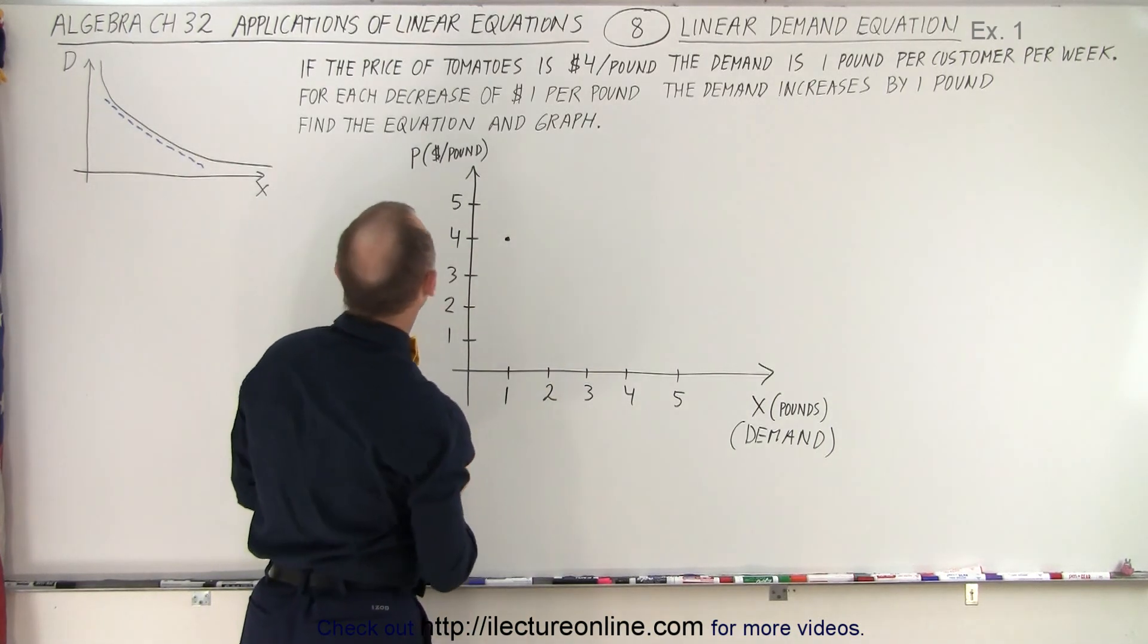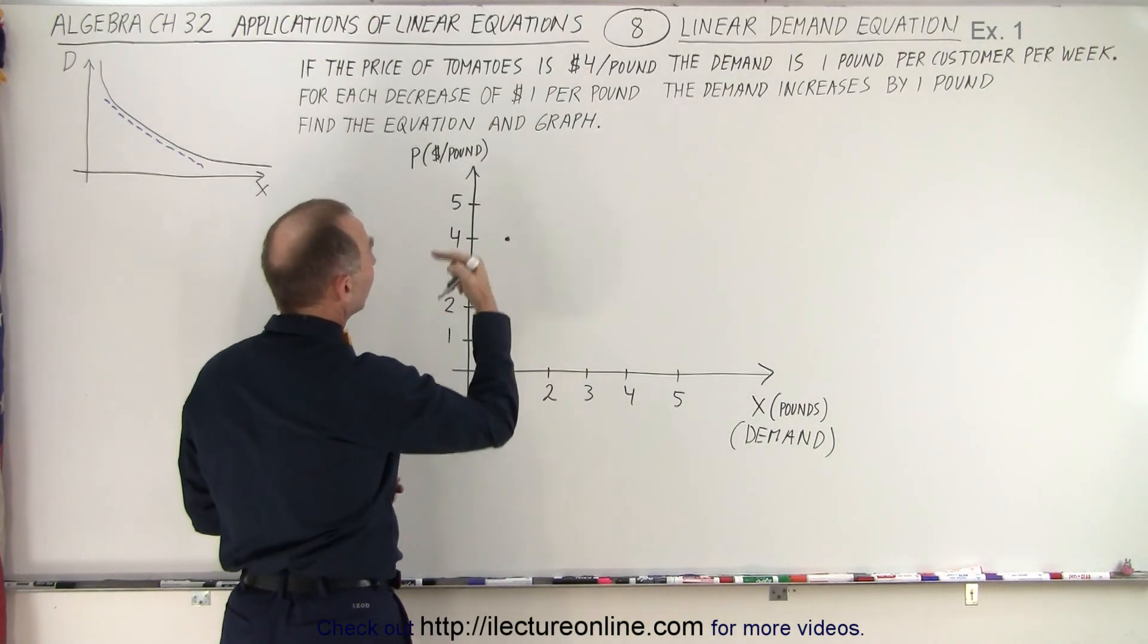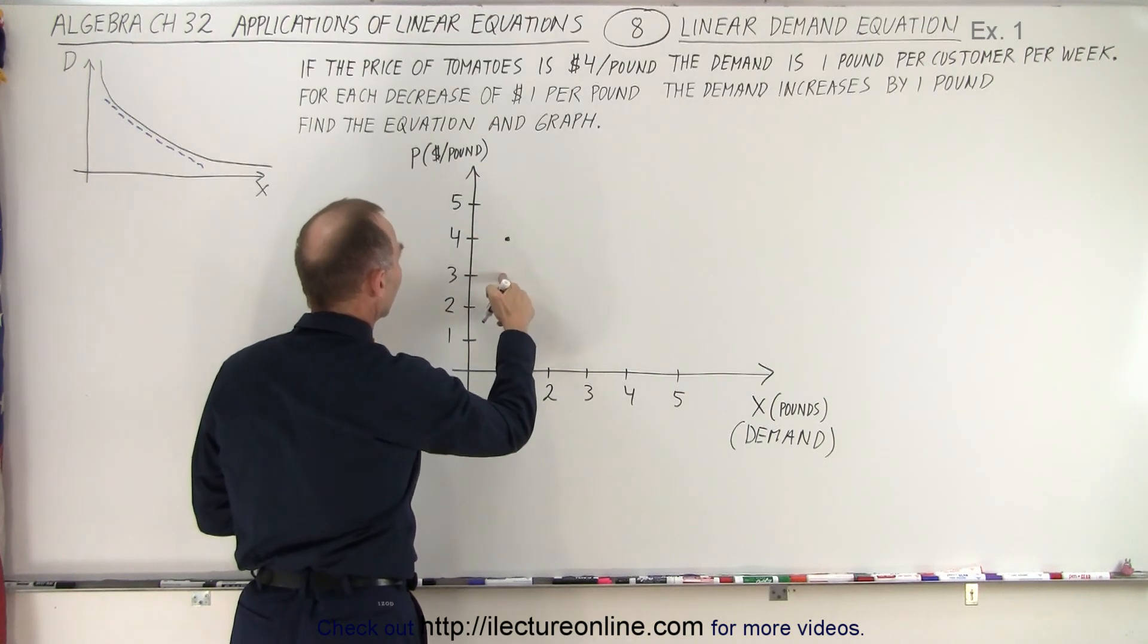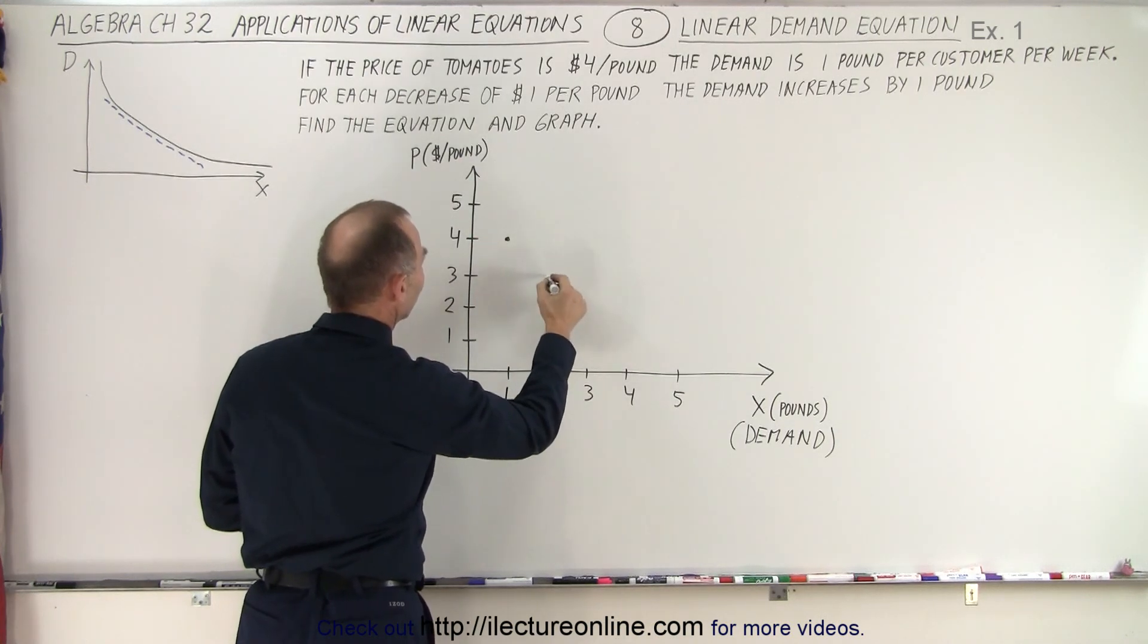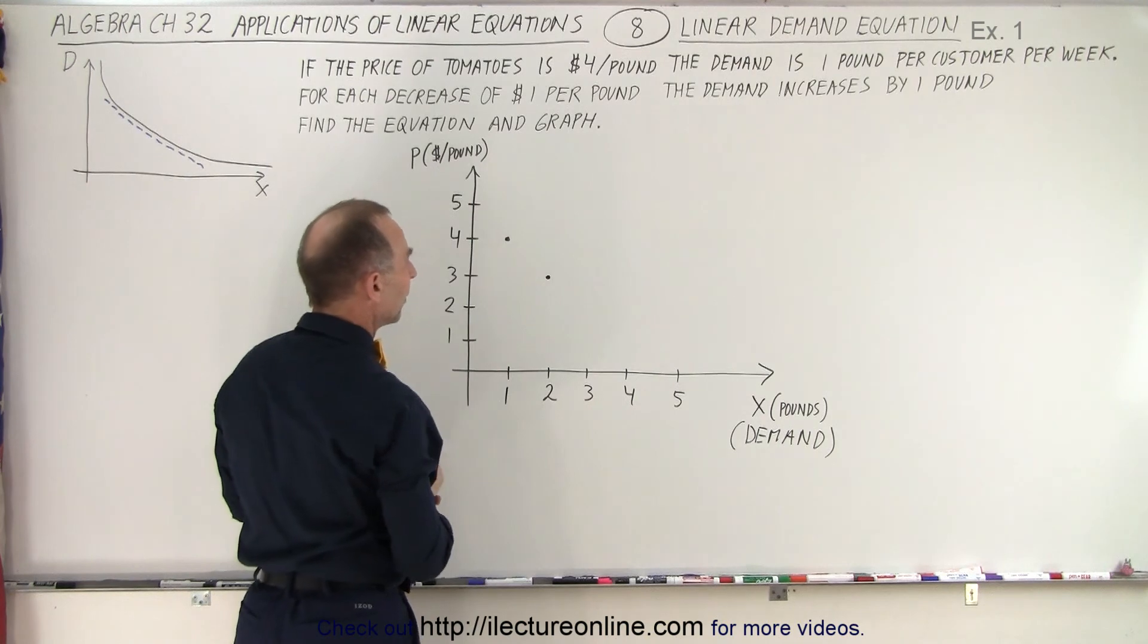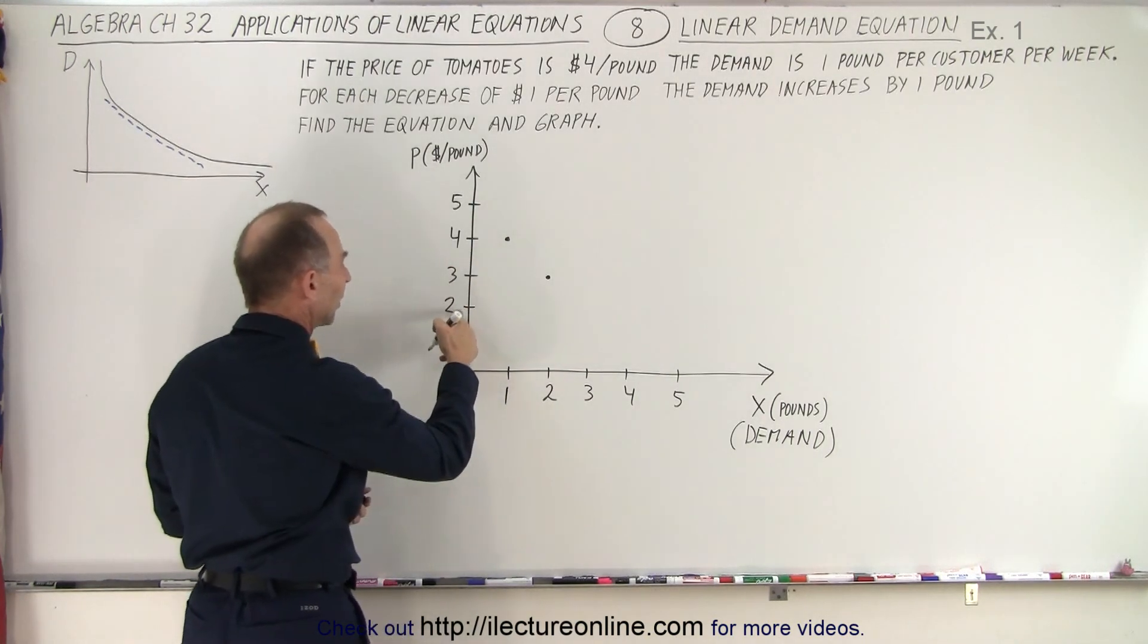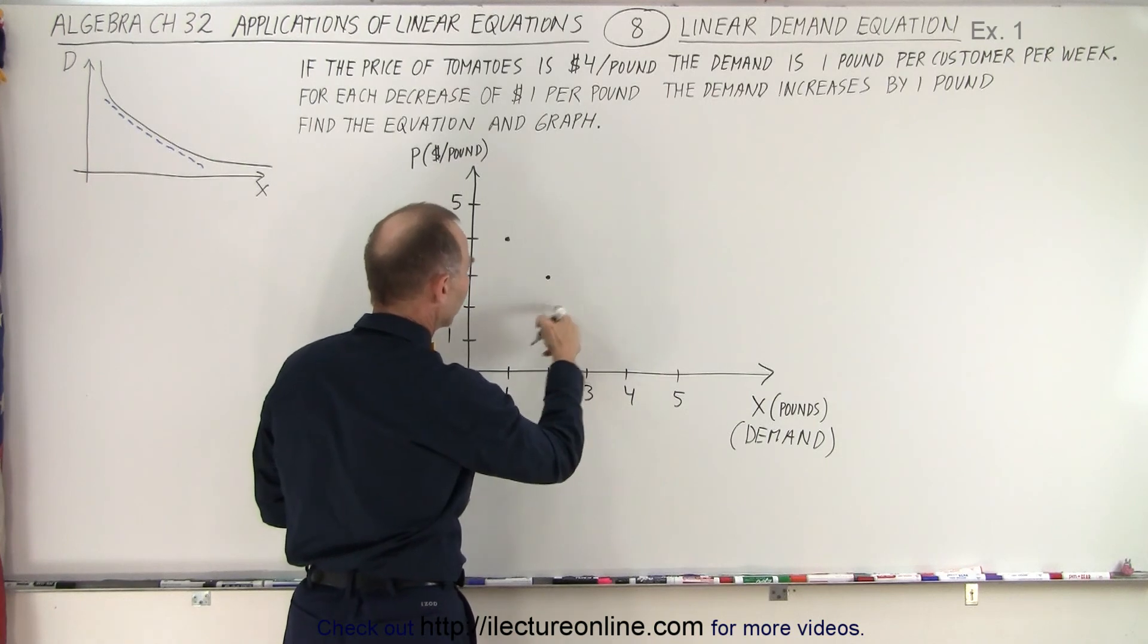And then they say that for each decrease of one dollar per pound, the demand increases by one pound. So if the price goes down to three dollars per pound, now we have an increase of one pound more than before. So now we're up to two pounds. If the price goes down another dollar, the demand goes up by another pound.